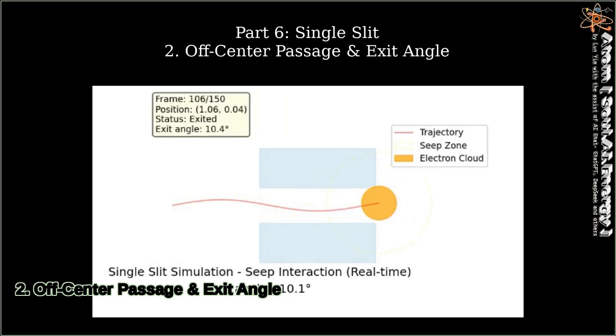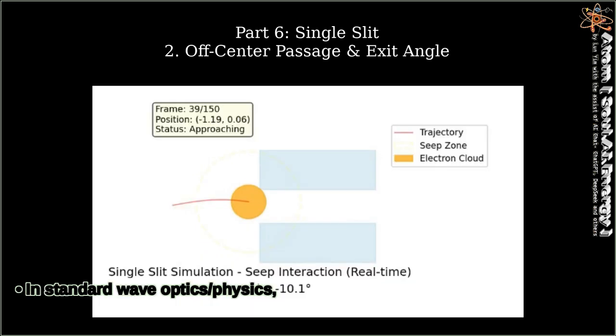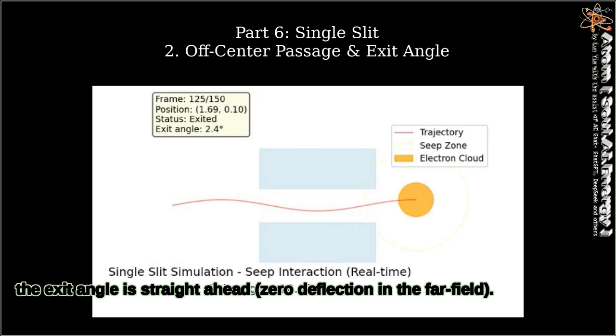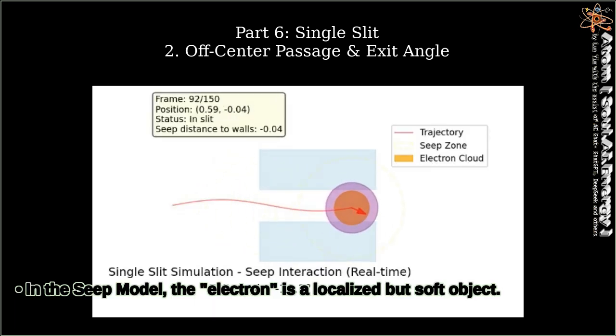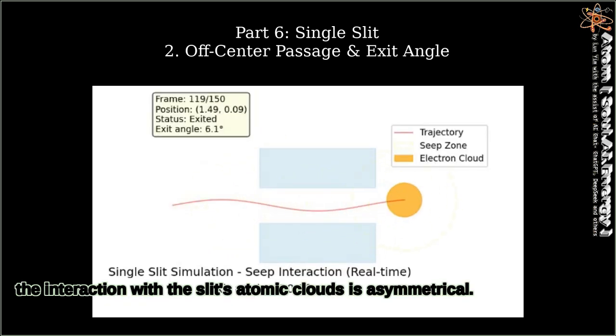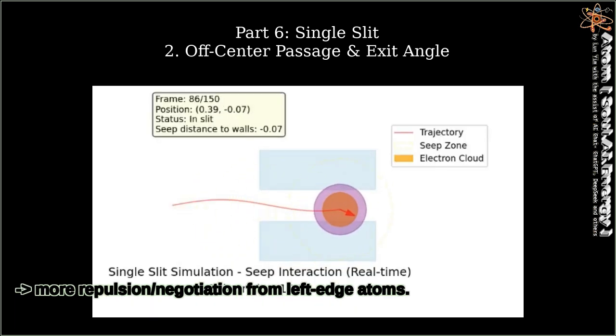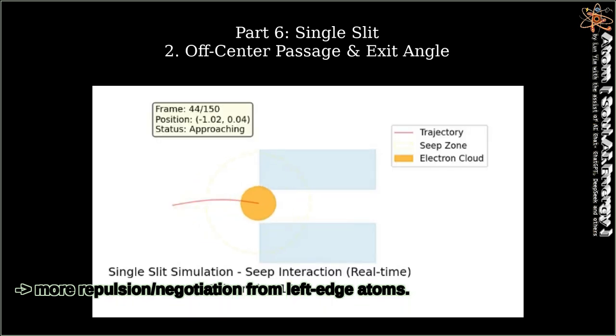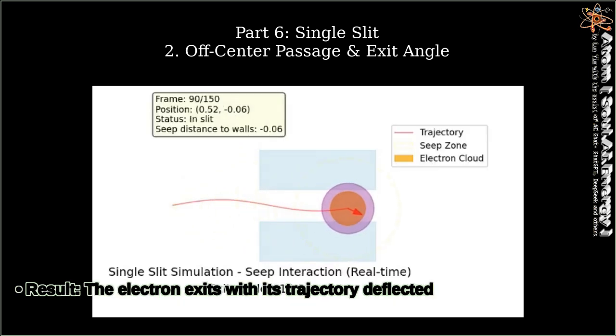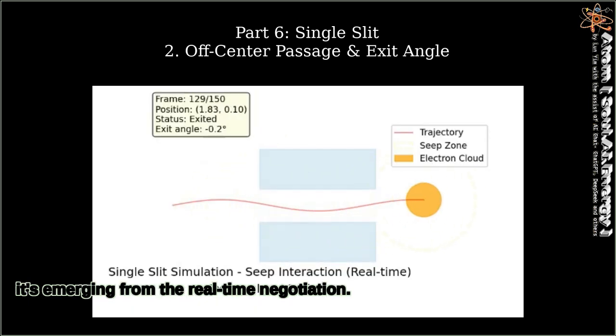2. Off-center passage and exit angle. In standard wave optics/physics, for a plane wave or symmetric wave packet centered on the slit, the exit angle is straight ahead—zero deflection in the far field. In the Seep model, the electron is a localized but soft object. Its center of presence may be off-axis. When it seeps through, the interaction with the slit's atomic clouds is asymmetrical. More seep overlap on the left side of the hole means more repulsion/negotiation from left-edge atoms. This acts like a gentle quantum bounce off the virtual wall of the seep interaction. Result: The electron exits with its trajectory deflected slightly away from the side it interacted with more strongly. Its exit angle is not predetermined. It's emerging from the real-time negotiation.